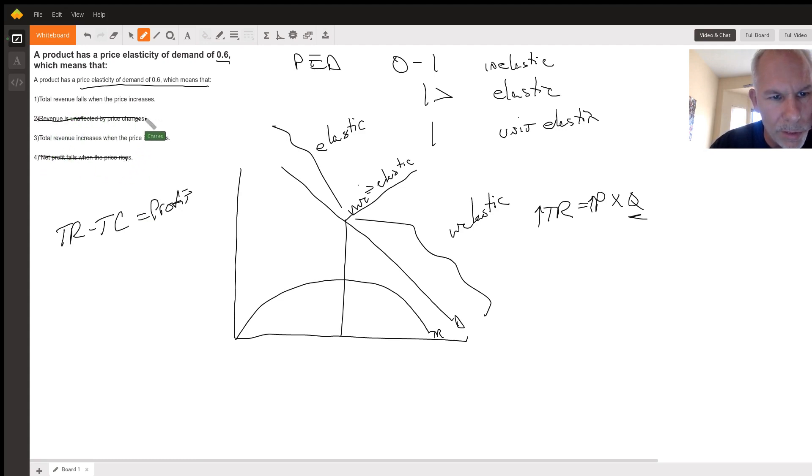This is usually the form when you start seeing total revenue in these elasticity questions. They really want you to recognize that if price goes up, let's say the demand was elastic and price went up, what happens to total revenue in the elastic section of the demand curve? It would go down.